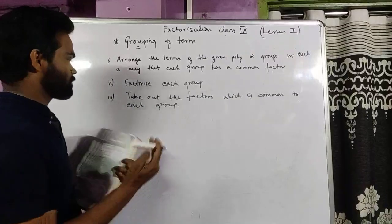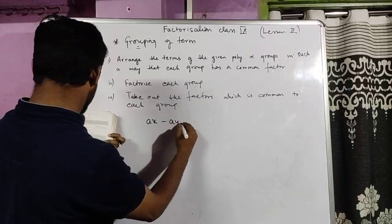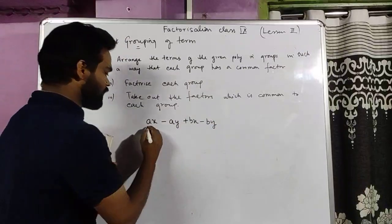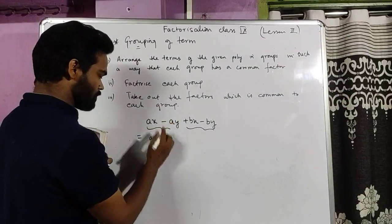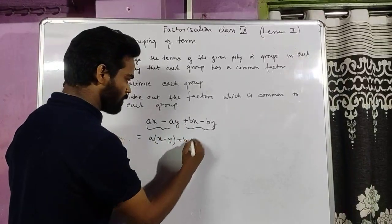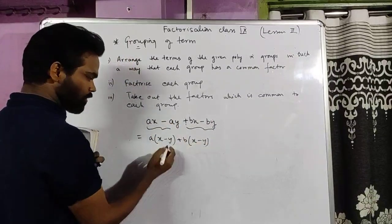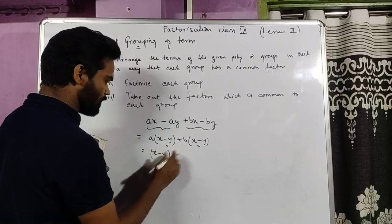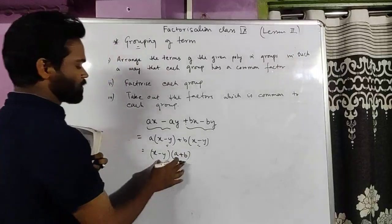Take one example. Suppose we have ax minus ay plus bx minus by. There are four terms arranged in groups of twos. Take a common — the SCF is a — so it becomes a(x minus y), plus take b common: b(x minus y). The grouping was done such that when you factorize each group, there is still something common. Take out (x minus y) common — the SCF is (x minus y). What is left? a plus b. So this is factorized.